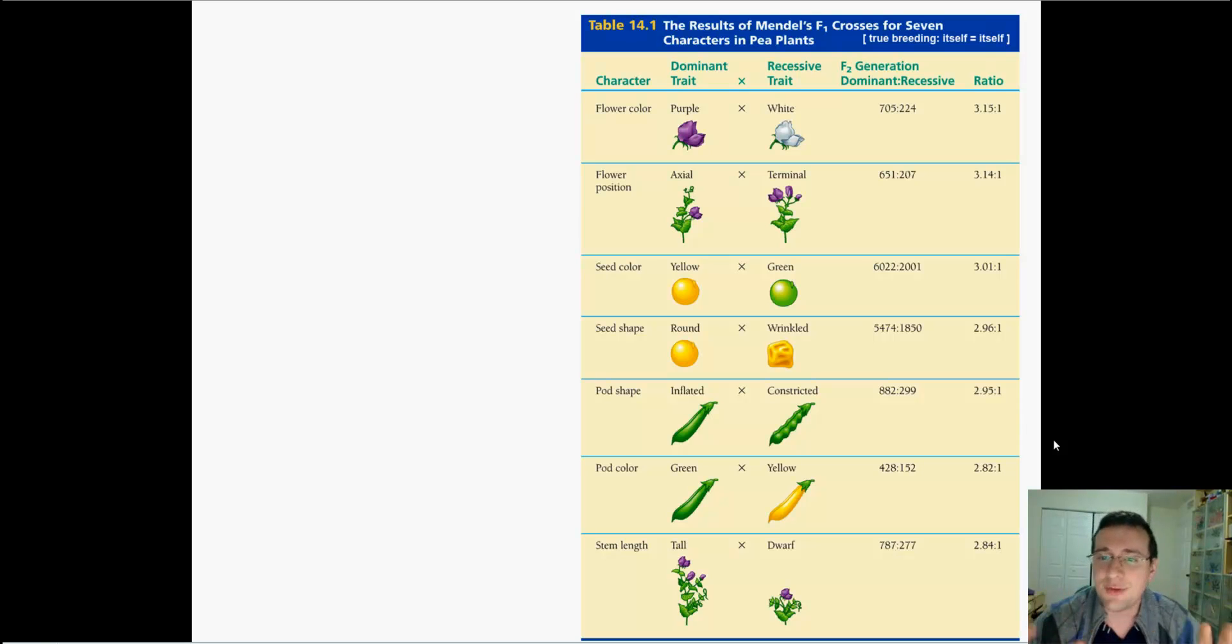It wasn't blending that was happening, it was something else because after two generations, all the peas didn't look the same. Instead, they looked different. So he realized that it couldn't be blending. They had to be doing something else. And he was the father of particle genetics. He pretty much got it right. Everything I'm teaching you in this lecture series is Mendel's idea.